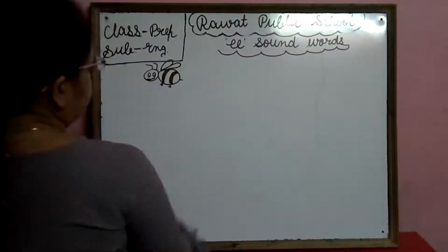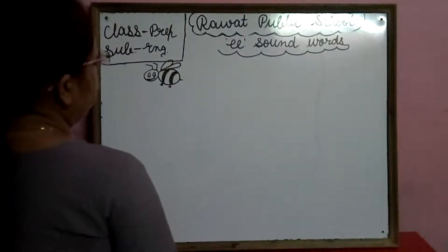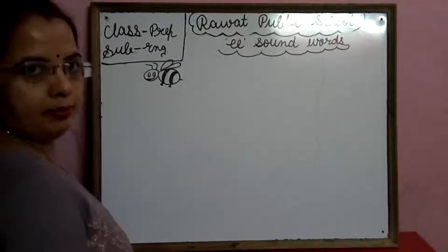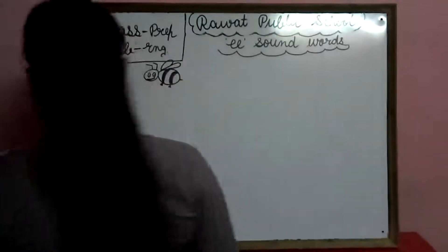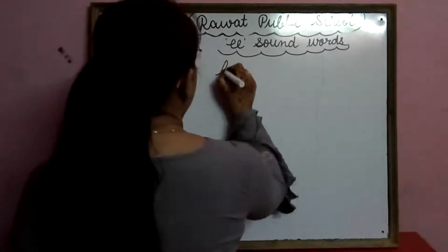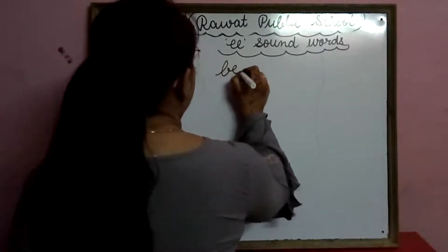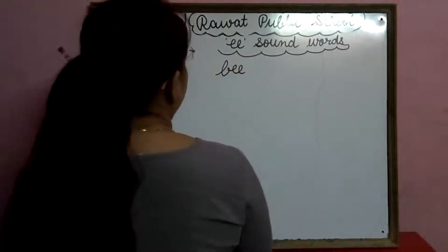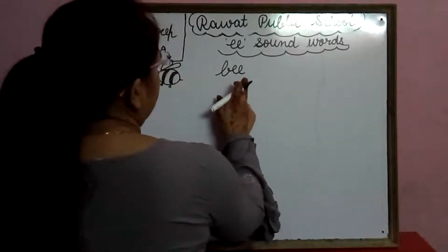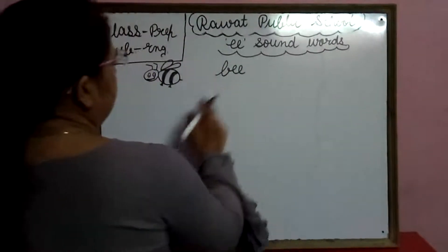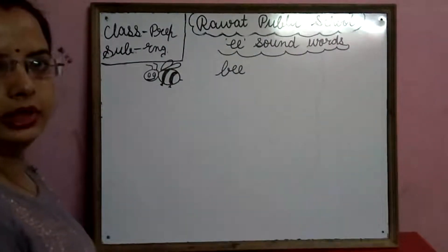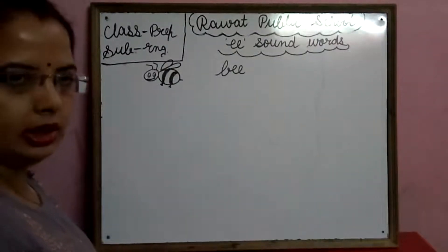This is a picture of a bee. B-double-E-B. What do we say? B-double-E-B — bee.